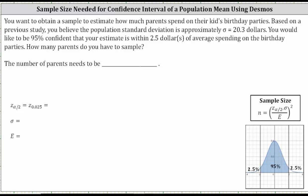You want to obtain a sample to estimate how much parents spend on their kids' birthday parties. Based on a previous study, you believe the population standard deviation is approximately $20.3. You would like to be 95% confident that your estimate is within $2.5 of average spending on birthday parties. How many parents do you need to sample?